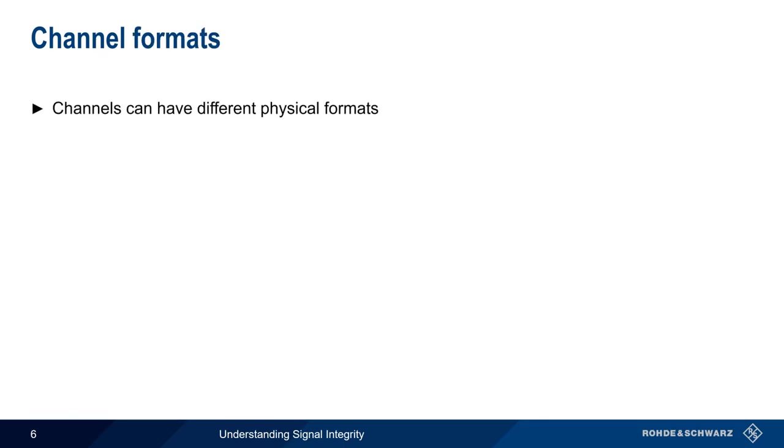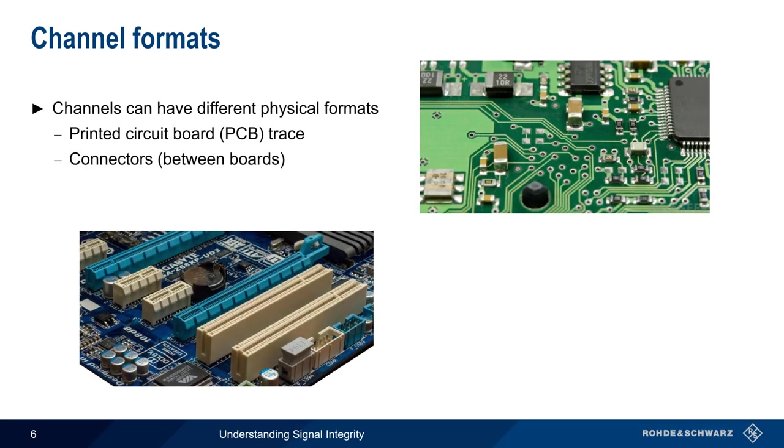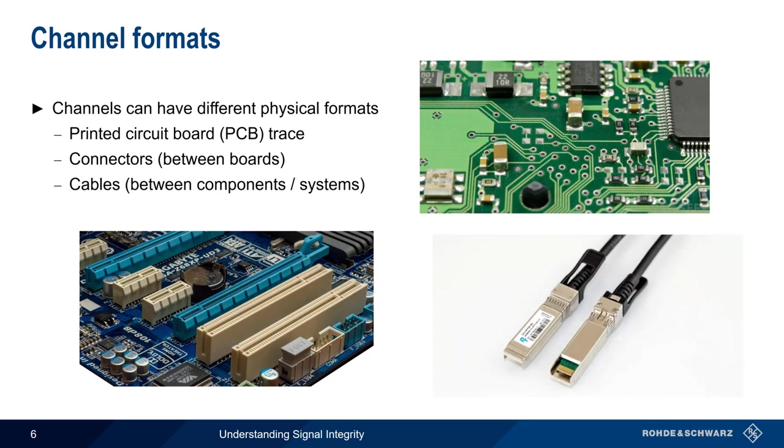Channels can have different physical formats. One of the most common types of channels is a trace on a printed circuit board, or PCB. The channel can also be in the form of connectors between different boards, or even cables between different components or systems.